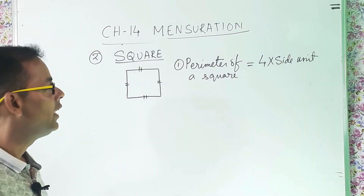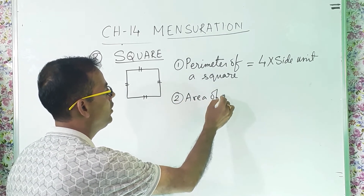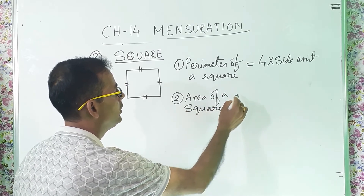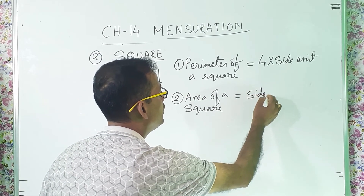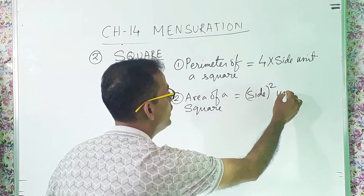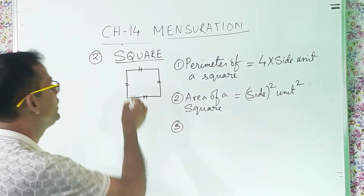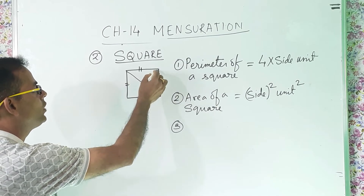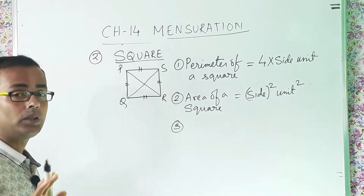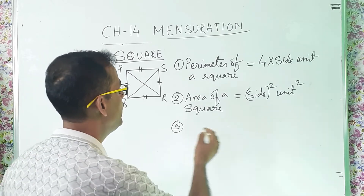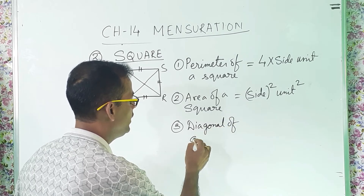The second formula is the area of a square, which is side squared, in unit square. Then the third formula is the diagonal of a square. You can name the vertices P, Q, R, S. Both diagonals of a square are equal.